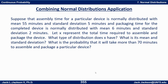Let's put this to work in a real-world example. Suppose assembly time for a particular device is normally distributed with mean 55 minutes and standard deviation 5 minutes, and packaging time is normally distributed with mean 6 minutes and standard deviation 2 minutes. Let x represent the total time to assemble and package the device. What type of distribution does x have, what is its mean and standard deviation, and what is the probability that it will take more than 70 minutes?